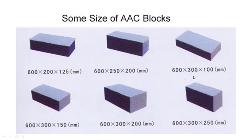AAC blocks come in different varieties and sizes. In most cases, the 625×200 size block is used, where the thickness is varied as per your requirement. This is the common size of Autoclaved Aerated Concrete which is mostly available in the market.